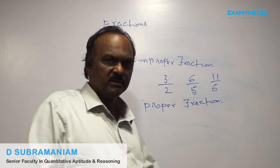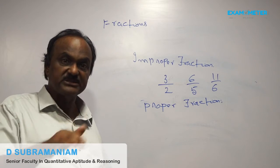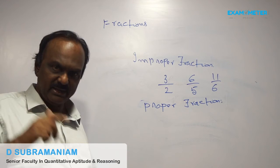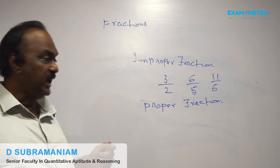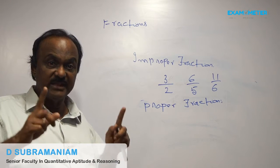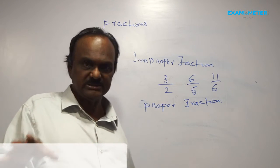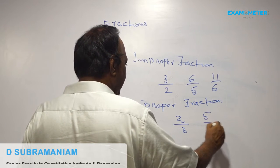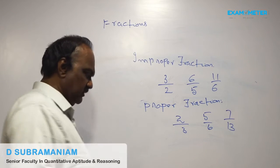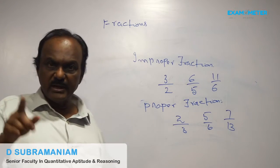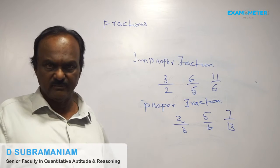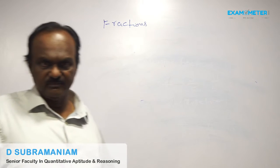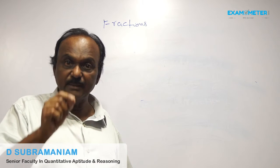Proper fraction: when the numerator is lesser than its denominator, then it is called a proper fraction. The value of a proper fraction will always be less than 1. Examples: 2 by 3, 5 by 6, 7 by 13, etc.